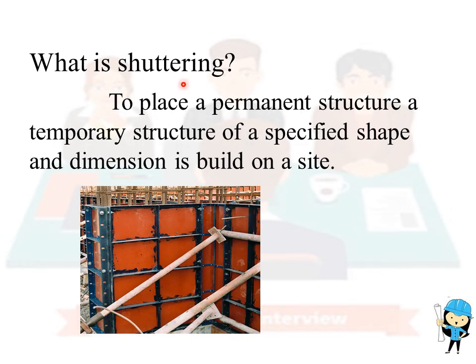The fourteenth question is: what is shuttering? To place a permanent structure, a temporary structure of specified shape and dimension is built on site. This is called shuttering. This is an example of shuttering for a column.